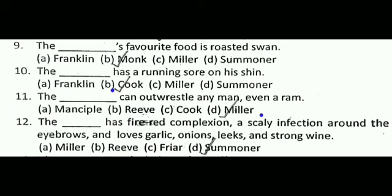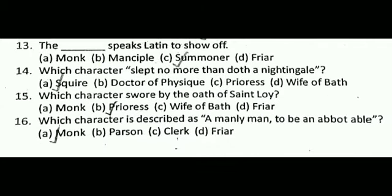Next question: The dash has a fire-red complexion, a scaly infection around the eyebrows, and loves garlic, onions, leeks, and strong wine. The correct answer is D, that is the Summoner. Next question: The dash speaks Latin to show off. The correct answer is C, that is the Summoner.